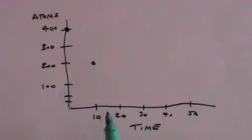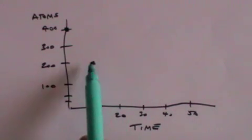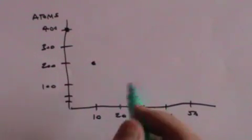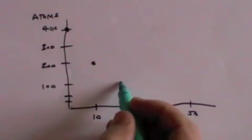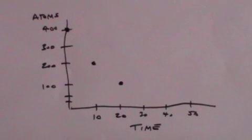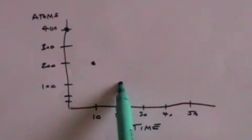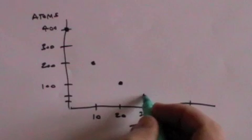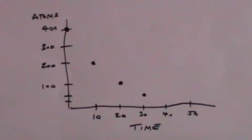But after a further 10 seconds, there will be half of 200. So after a further 10 seconds, there will now only be 100 atoms. After a further 10 seconds, there will only be half of what we had before. So now there will only be 50 atoms.